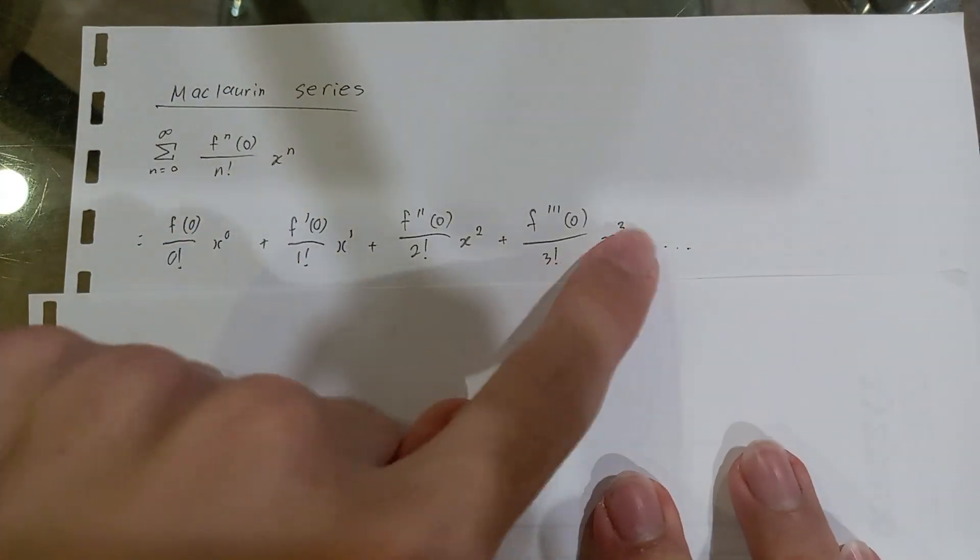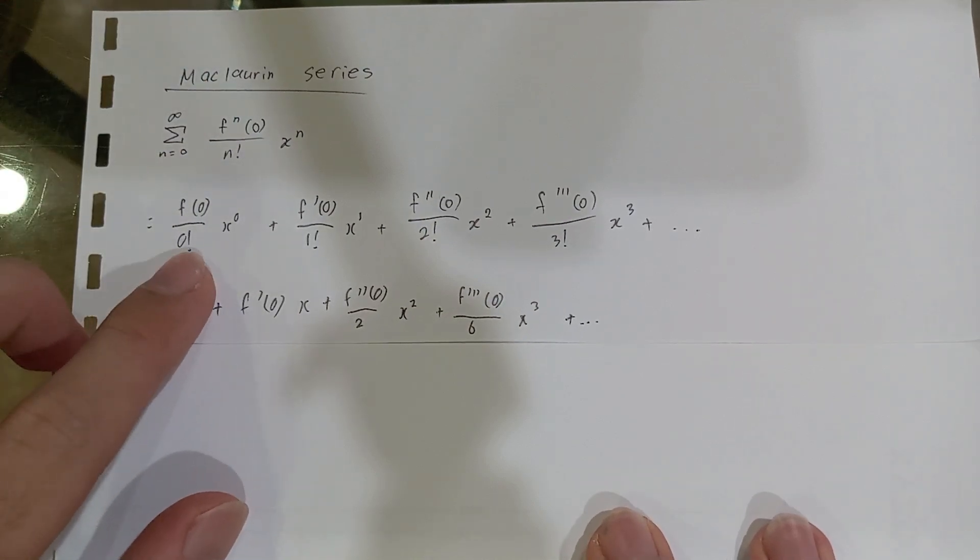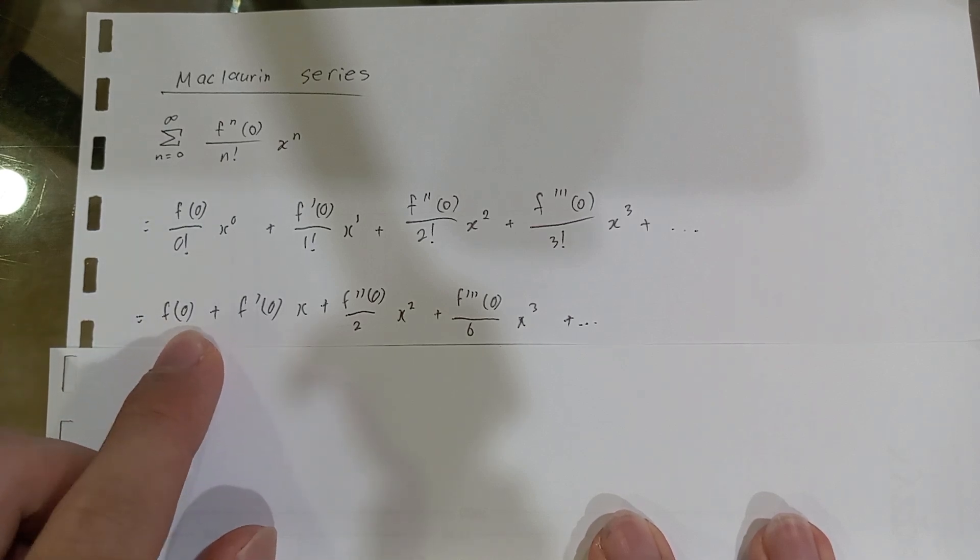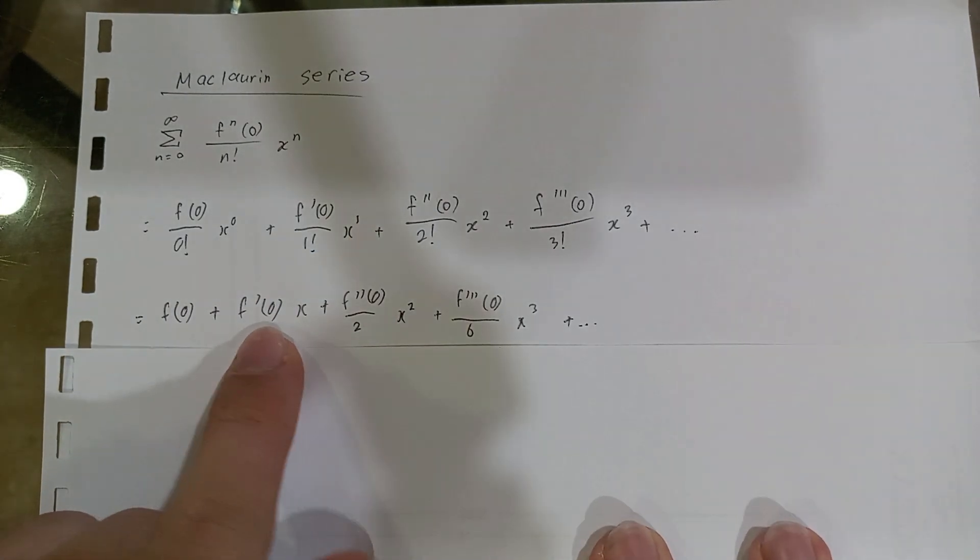Now simplifying this further. 0 factorial equals 1, x to the power of 0 also equals 1, so you're left with f at 0. For the second term, 1 factorial is 1, x to the power of 1 is x.